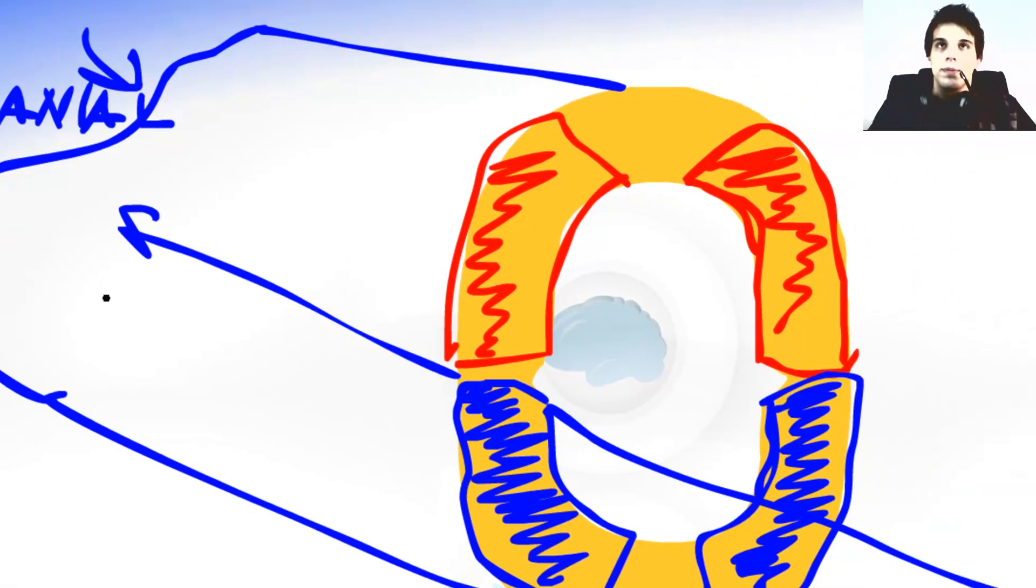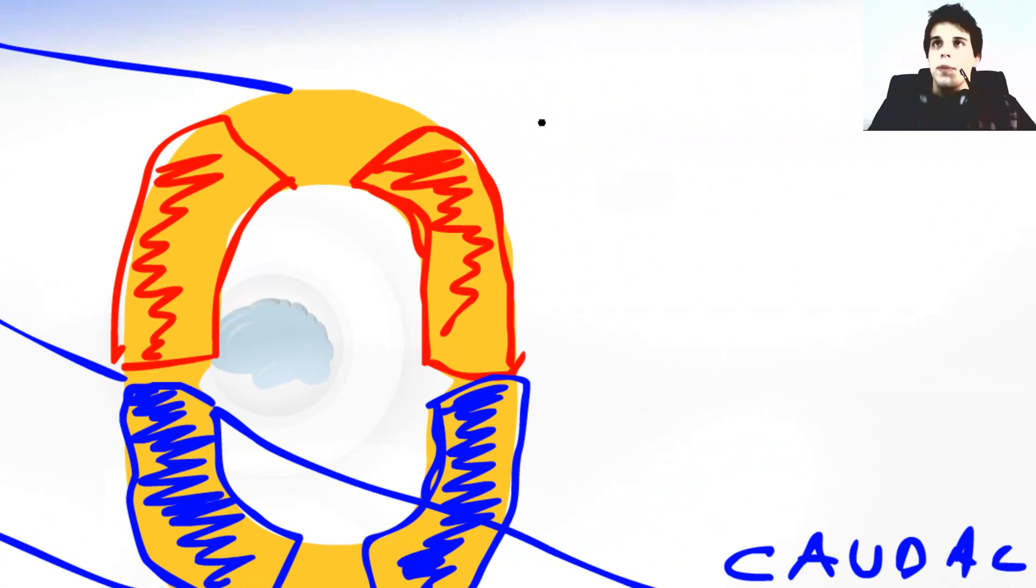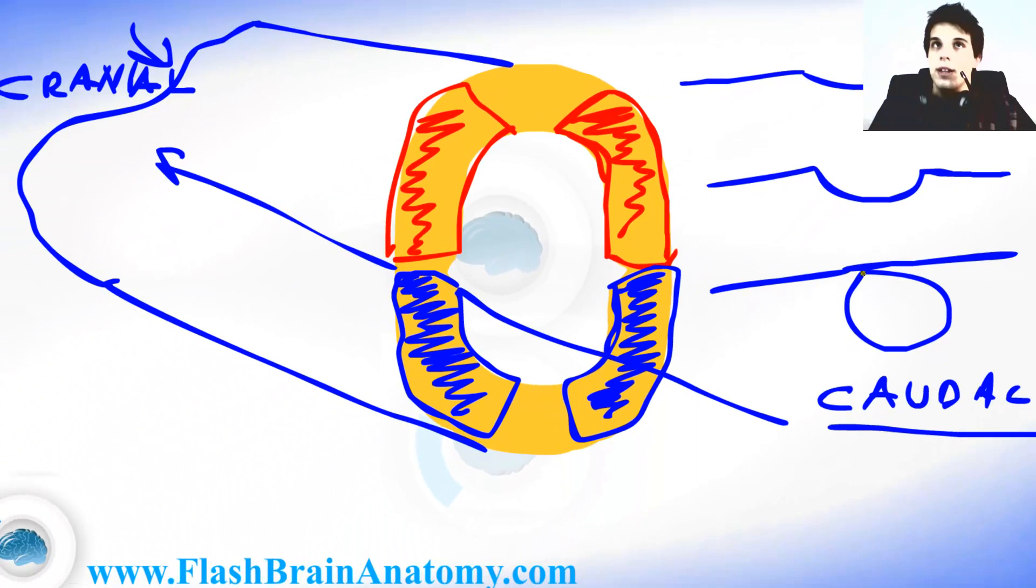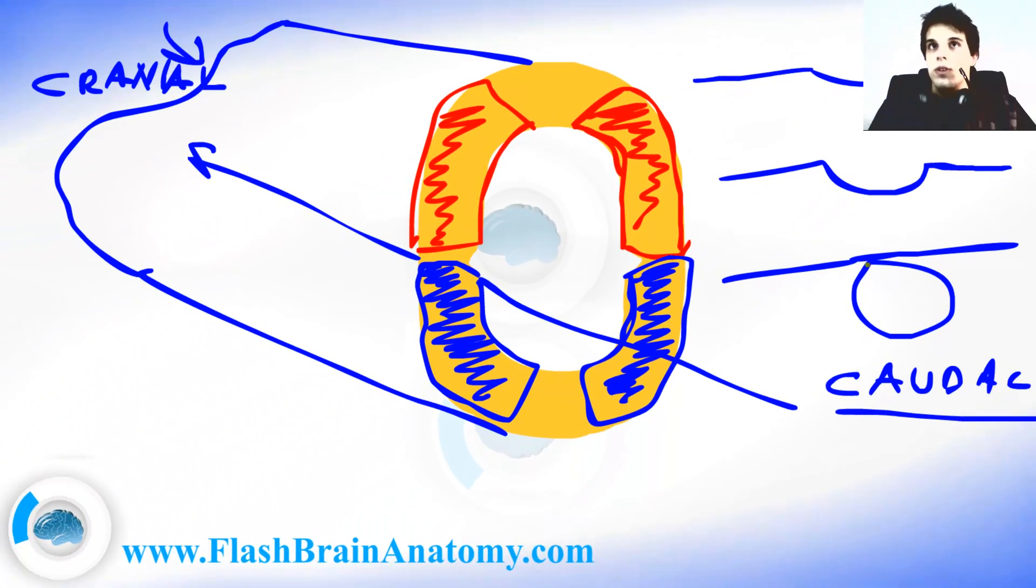So over here it's opened. Try to remember we had the ectoderm like this, and then we had the thickened neural plate, and then we had the ectoderm again. And then the neural plate got deeper and the neural tube is created. Now this does not happen at the caudal and cranial end of the embryo. So the neural tube remains open, but not forever. It closes. But it closes a bit later than the rest of the neural tube.